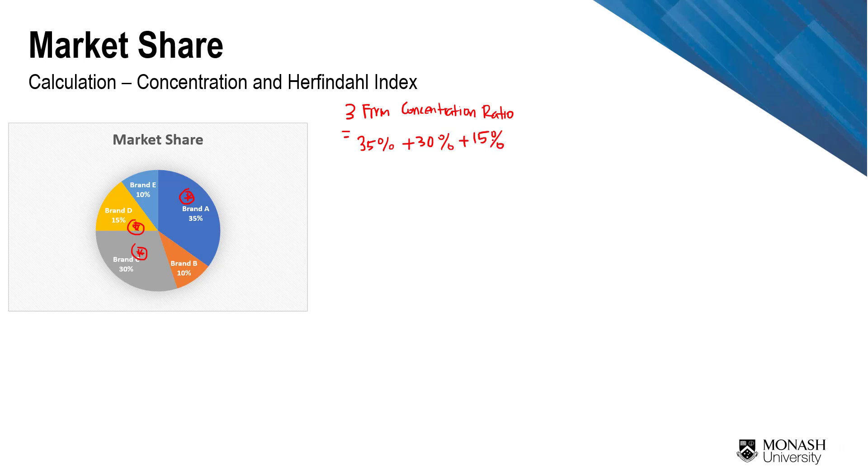So 35% from brand A, 30% from brand C, and 15% from brand D. And therefore, that will be equivalent to 80%.